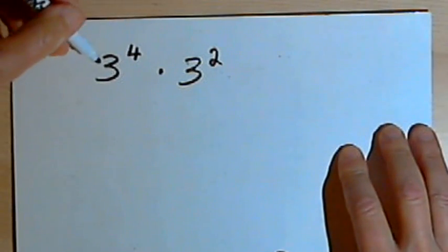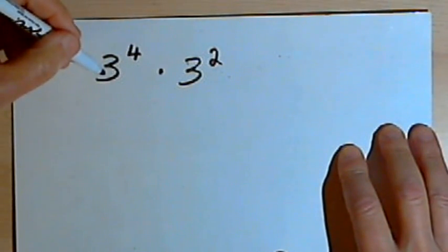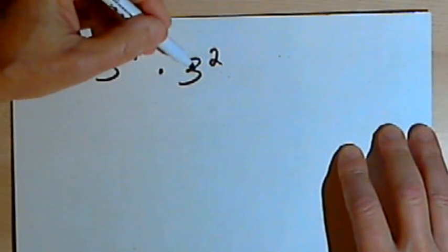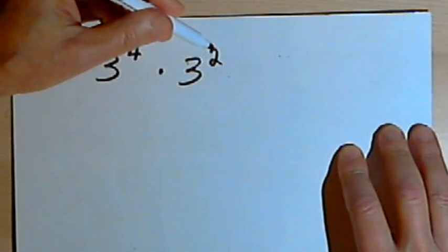Here I've got a situation where I want to multiply 3 raised to the fourth power times 3 squared, or 3 to the second power.